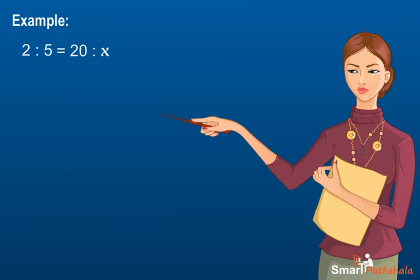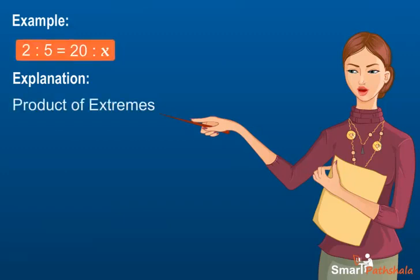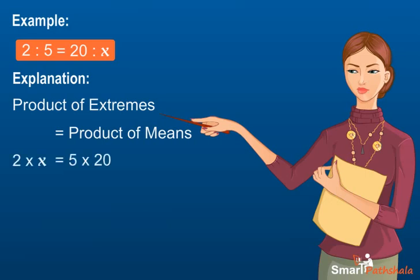Example: If two men can complete 20 tasks in a week, how many such tasks will five men complete in a week? Explanation: We have the proportion as shown here. Now the product of extremes is equal to product of means. 2 multiplied by x is equal to 5 multiplied by 20. X is equal to 50 tasks.